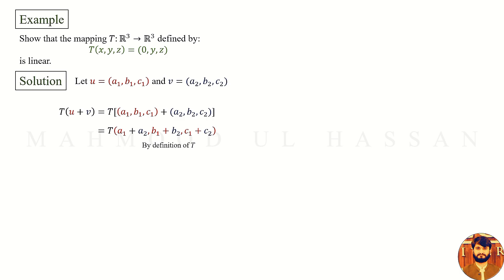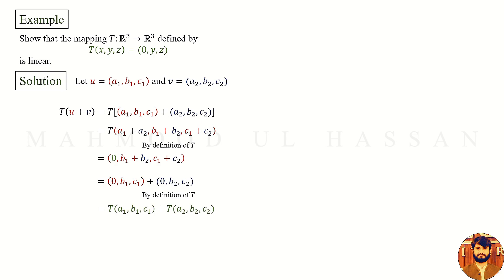By definition of T, this gives us (0, B1 plus B2, C1 plus C2), which can be written as (0, B1, C1) plus (0, B2, C2). By definition of T, this equals T of (A1, B1, C1) plus T of (A2, B2, C2), which is T of U plus T of V. So the additivity property is clearly satisfied.